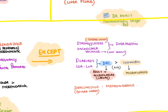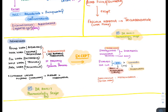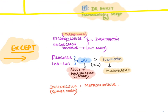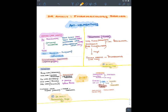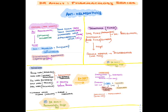In pregnancy, albendazole is teratogenic — use pyrantel pamoate instead. Cutaneous larva migrans (from hookworm/Ancylostoma) also uses albendazole. Exceptions among nematodes: Strongyloides and Onchocerca volvulus (river blindness) — ivermectin is drug of choice. For filarial worm and Loa loa — diethylcarbamazine (DEC) plus ivermectin. For Dracunculus (guinea worm) — metronidazole.